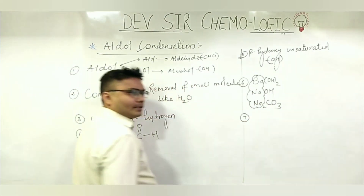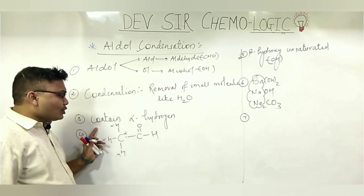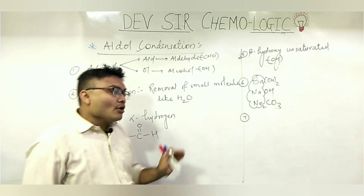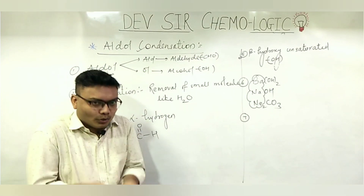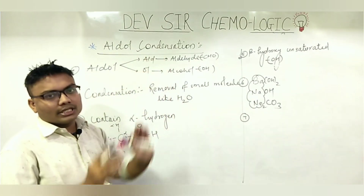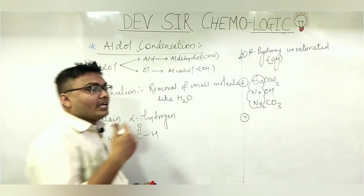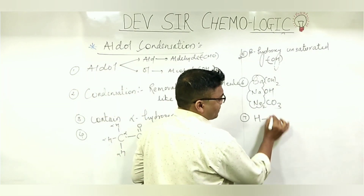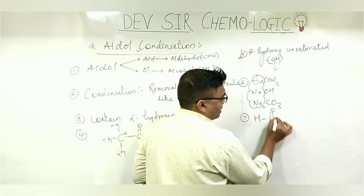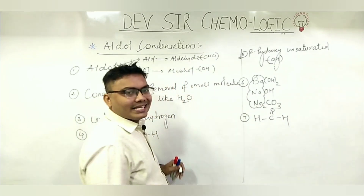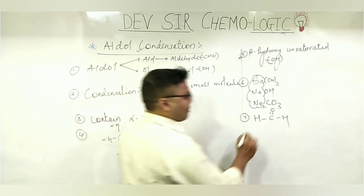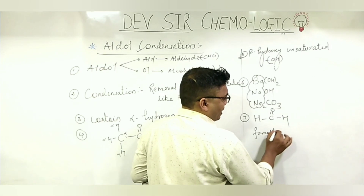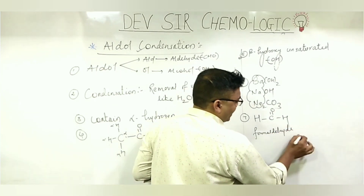Compounds which do not have alpha hydrogen — aldol condensation is not possible with those. For example, formaldehyde: H-C double bond O-H. Formaldehyde has no alpha carbon, so there is no alpha hydrogen. Clear?